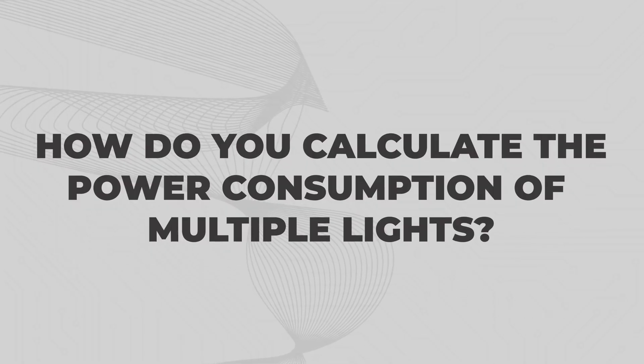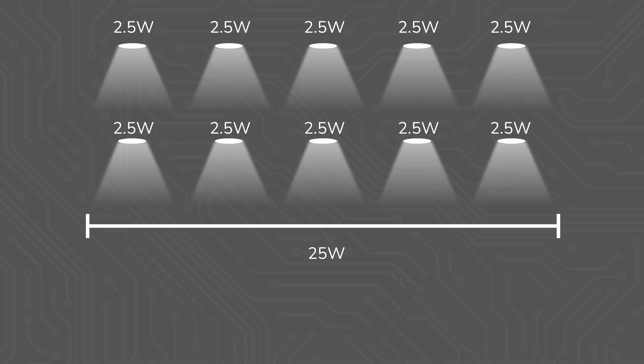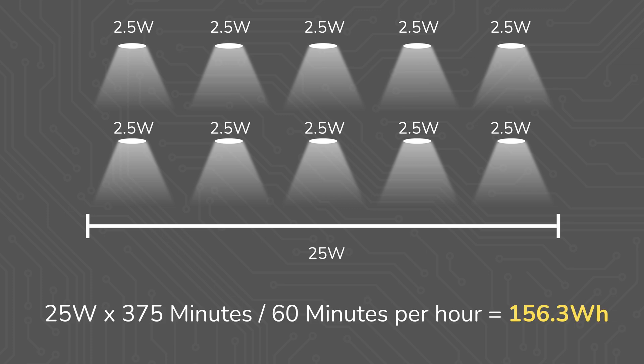How do you calculate the power consumption of multiple lights? Calculating the power consumption of multiple puck lights is the same as a single light, except that you just need to add all of the lights together since they're all going to be on at the same time. So if you had 10 puck lights on at the same time, instead of 2.5 watts, you just multiply the wattage of the lights times the number of lights, which is 25 watts here, and then put that into the same equation from earlier, which results in 156.25 watt hours used.